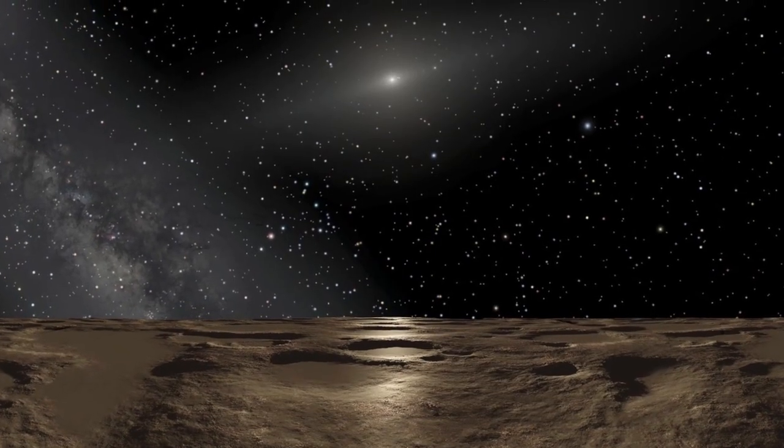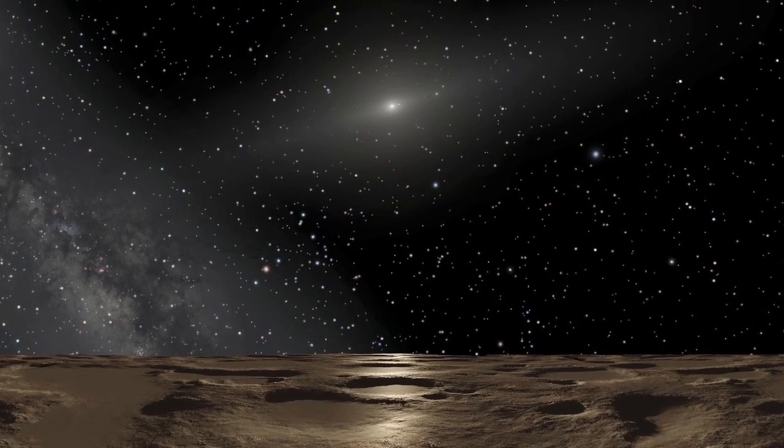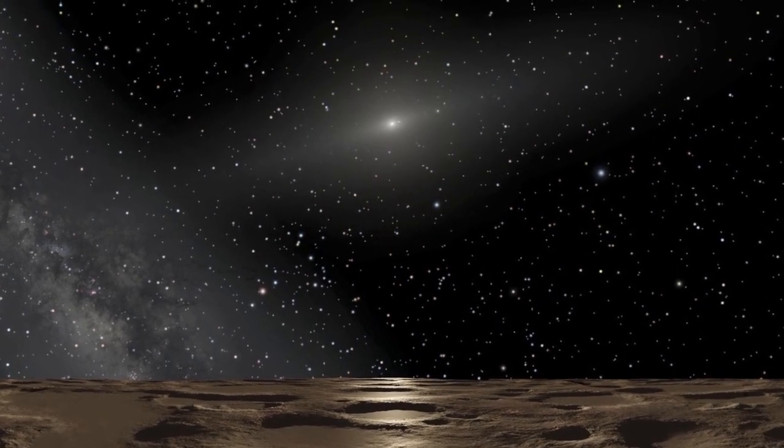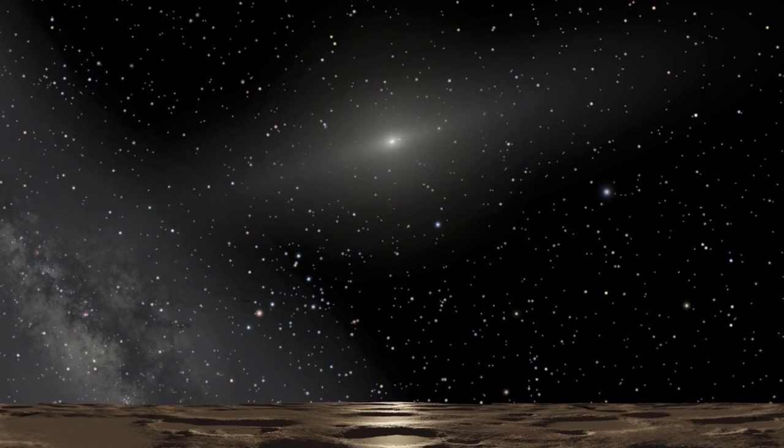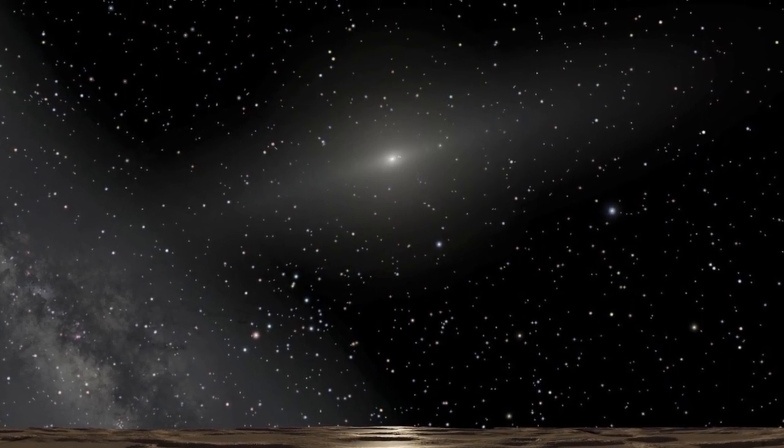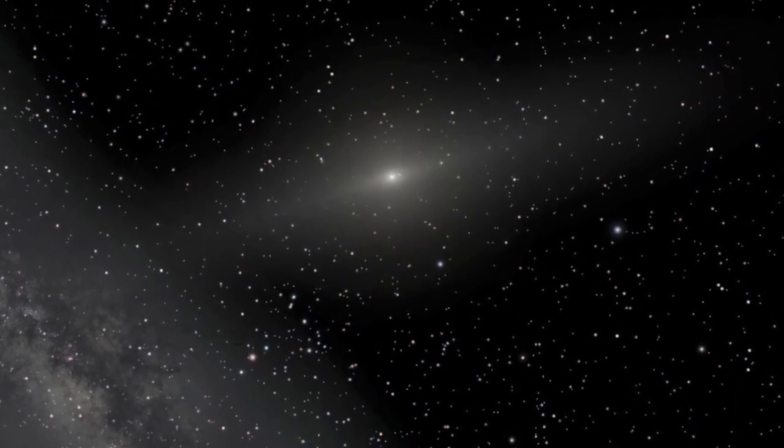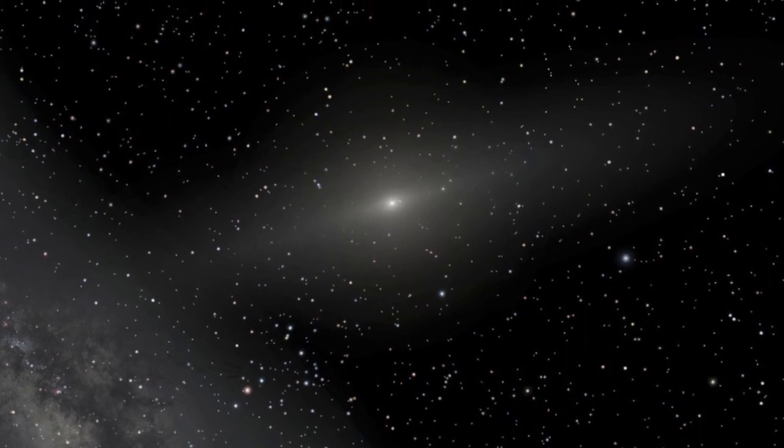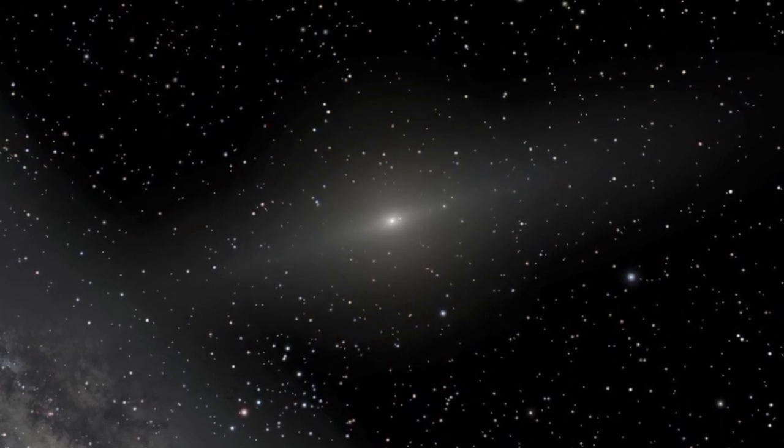This is an artist's impression of what the Sun would look like as seen from the planetoid Sedna, which is about 85 times as far from the Sun as Earth is. That's about three times as far as Neptune, the outermost planet in our solar system. The Sun is much weaker, just distinguishable from the background stars.